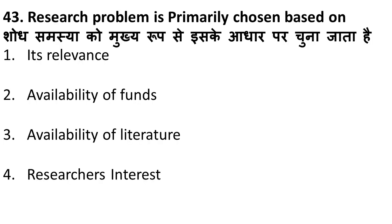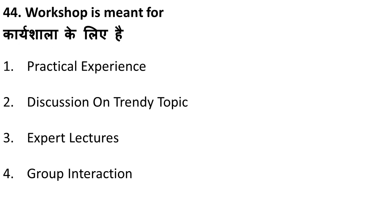Next question: research problem is primarily chosen based on what? The main criterion for choosing a research problem is the interest of the researcher. It is not about relevance, availability of funds, or availability of literature — if you are not interested, there will be no motivation to do research. The correct answer is researcher's interest.